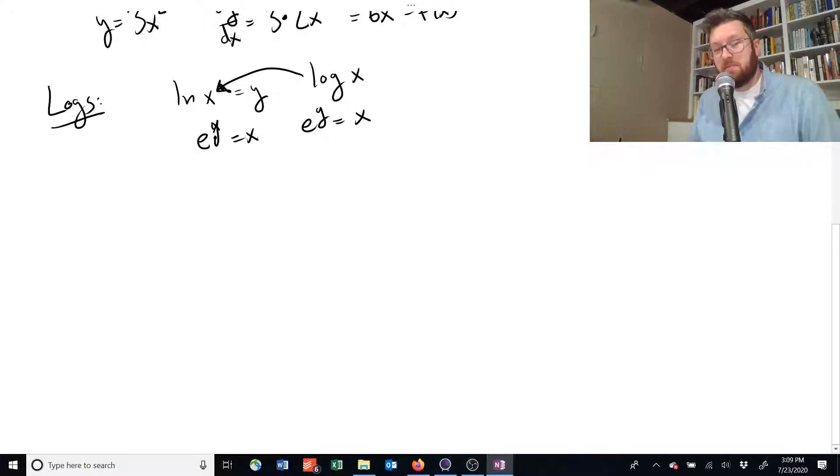The reason, the difference is what's this thing equal to? This, instead of an e, we use a 10, and it just means the derivative is a little bit harder to work with. So if we have y equals the natural log of x, what's the derivative of that? Well, it's just 1 over x.